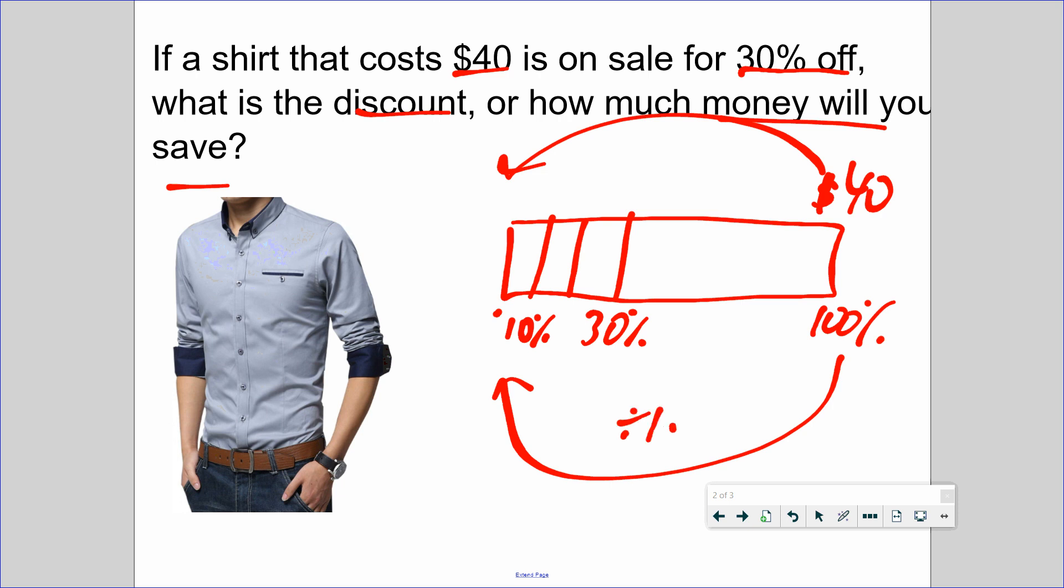What is the relationship between 100% to 10%? Divided by 10, or one tenth of it. 40 divided by 10 is $4, so every 10% is $4. So another 10% is $4, another 10% is $4. That means 30% is $12.